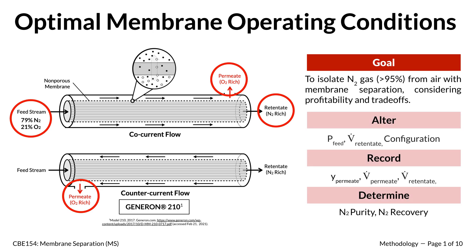To accomplish our goal, we altered relevant variables and recorded the flow rates and compositions of the retentate and permeate streams. We will explain our conclusions and findings throughout this presentation, alongside a mathematical model that we developed to further understand the membrane cartridge.